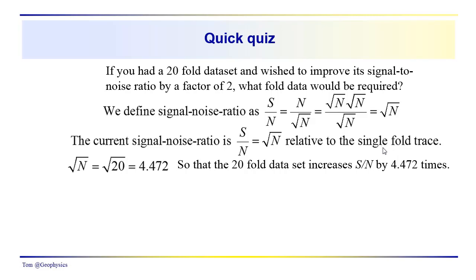So if you only collected one trace, now that you have 20 traces, you've increased your signal-to-noise ratio over a single-fold data set to 4.472 times its original signal-to-noise ratio. And that could have been pretty bad, it could have been okay,